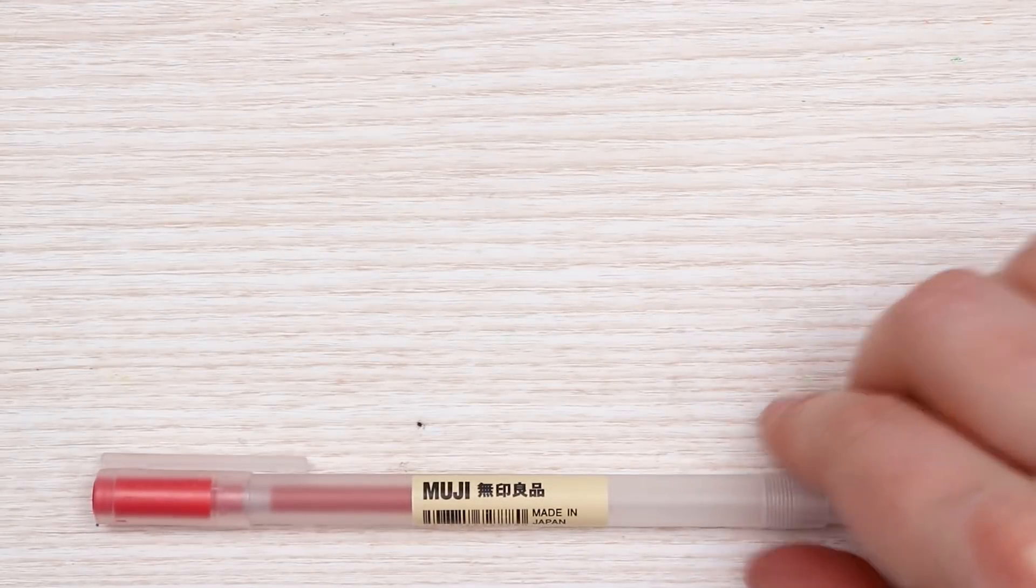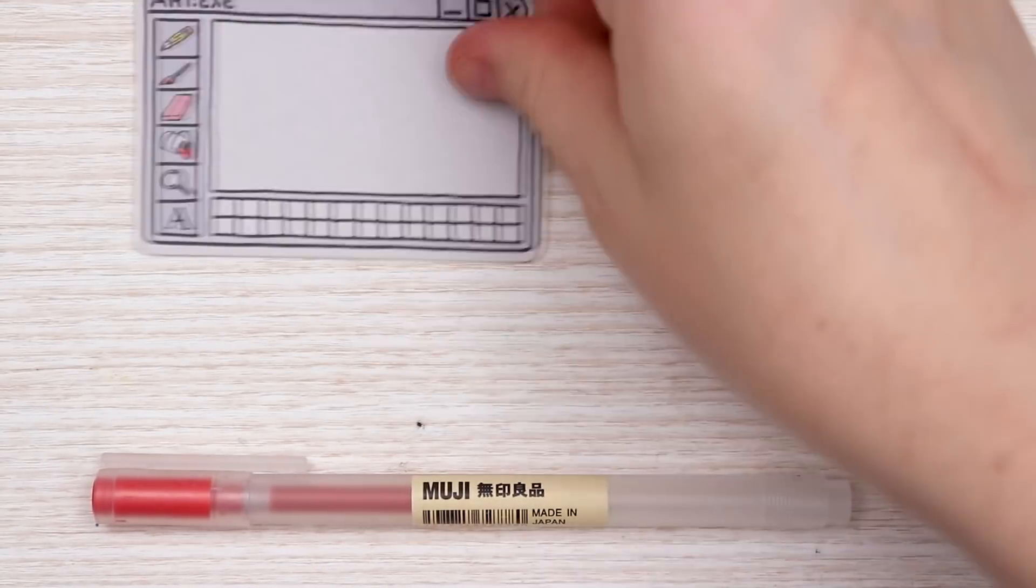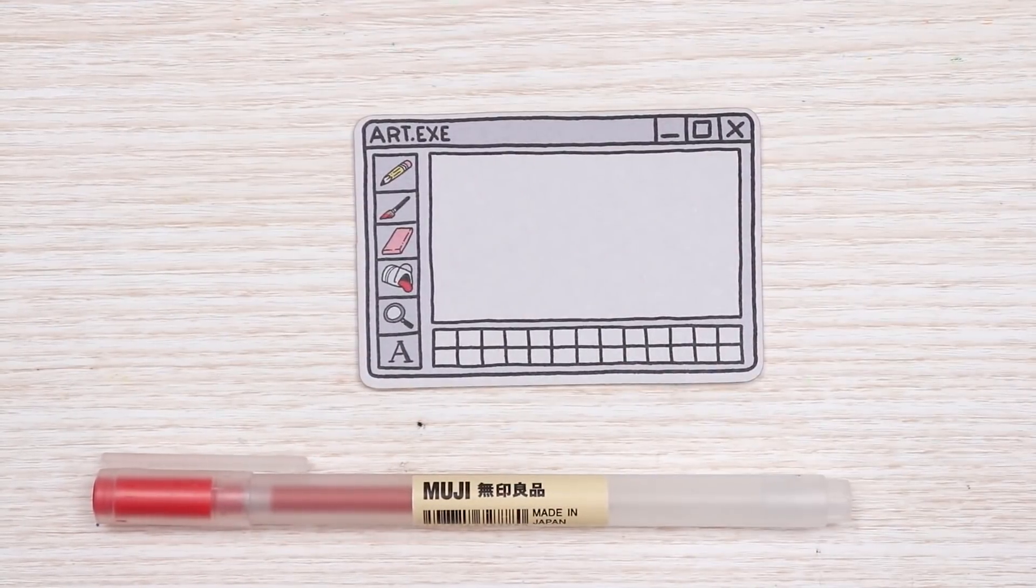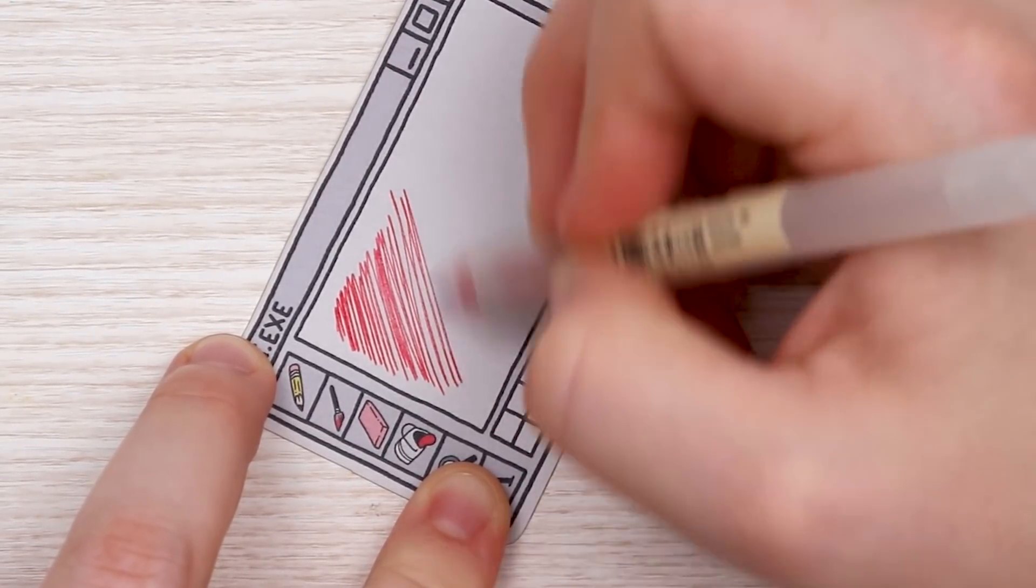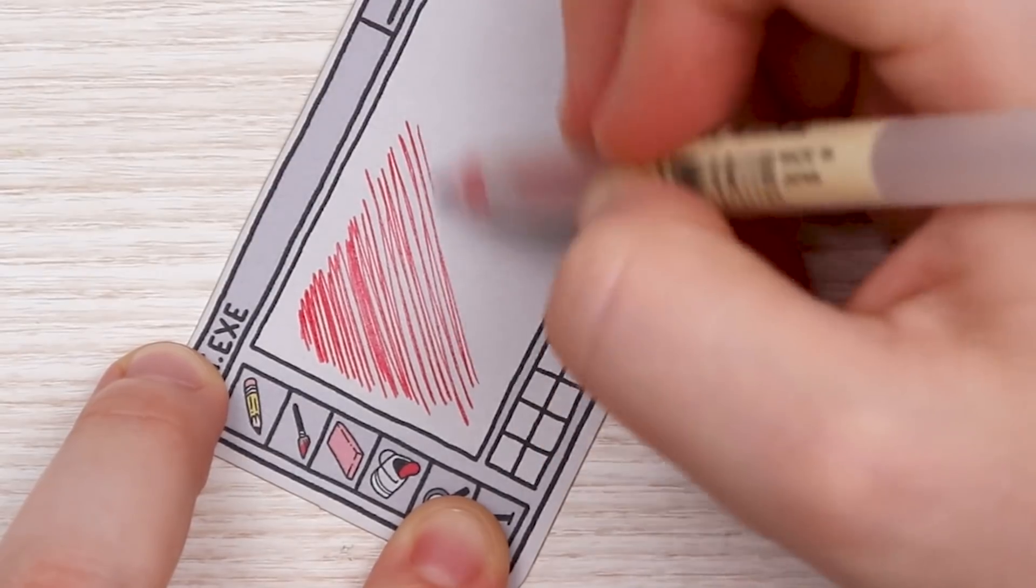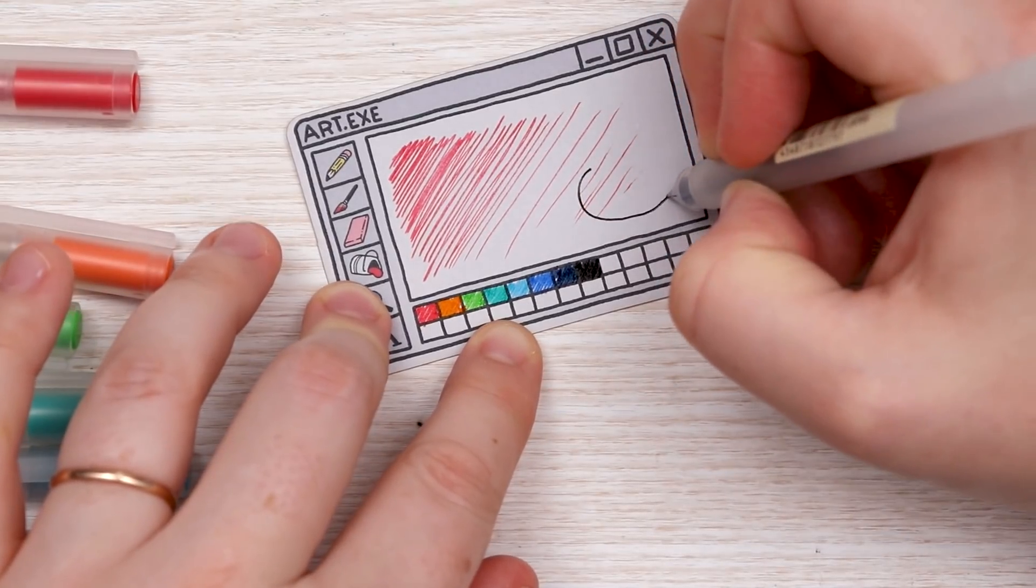Next up we have these Muji ballpoint pens. These are actually my favorite pen to sketch with. I actually do know that they work because I tested them for my product photoshoot. Let's put a kitty doodle over here. Heck yeah, a ballpoint pen.